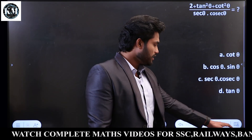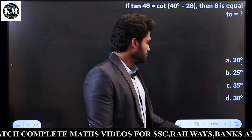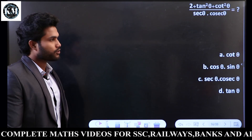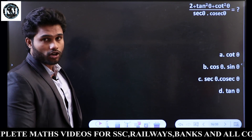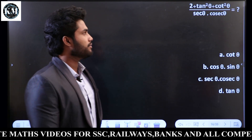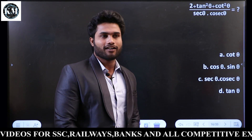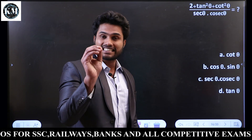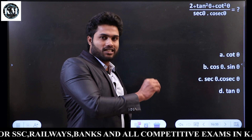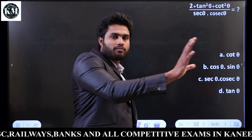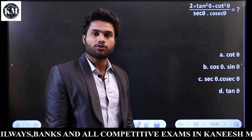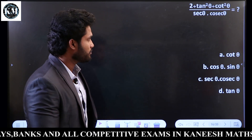Now, in the sum: 2 plus tan square theta plus cot square theta, divided by secant theta into cosecant theta. This is a CGL loaded question. We will use the A plus B equal to 90 degree concept.